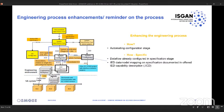The last point is about automating the configuration stage. The data flow is now already inside your system specification, which can enable more automation in implementing the specified data flow inside the IEDs — especially if the ICD file contains the necessary enhancements to automate this step. By improving specification, we allow more automation in the configuration stage, and that is what we are trying to achieve by enhancing the global engineering process.